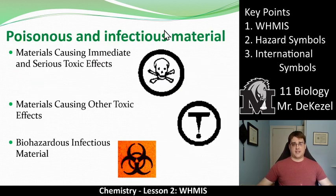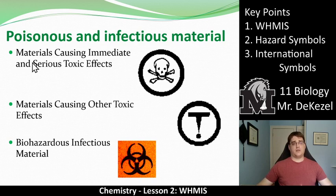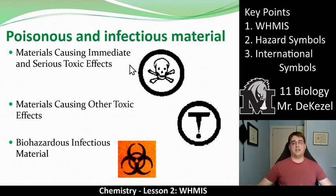We have poisonous and infectious materials. There are three different kinds, each with different names. The skull and crossbones represents materials causing immediate and serious toxic effects — essentially if you consume it, you'll be poisoned immediately with very serious outcomes.